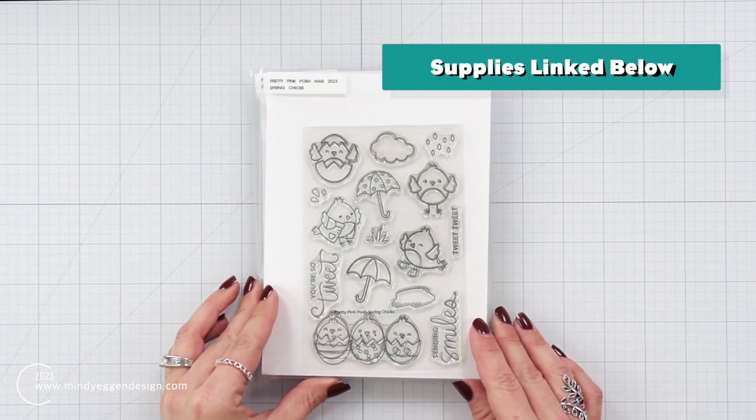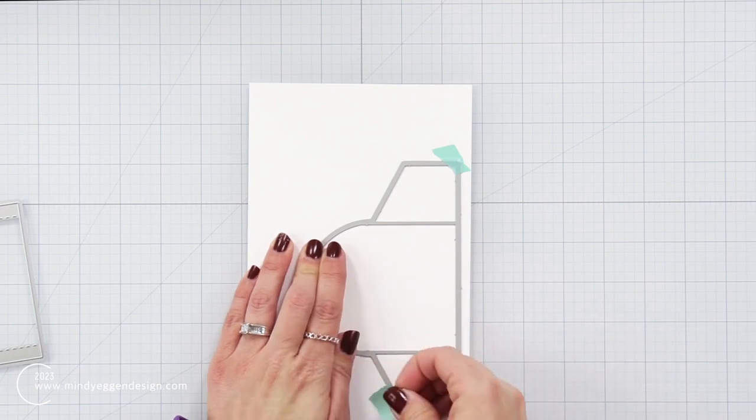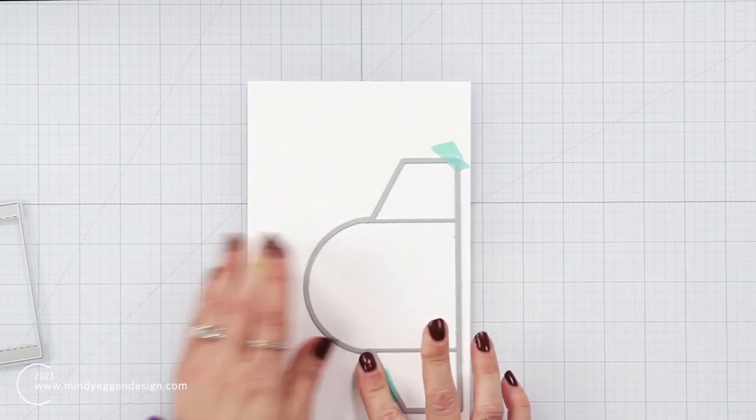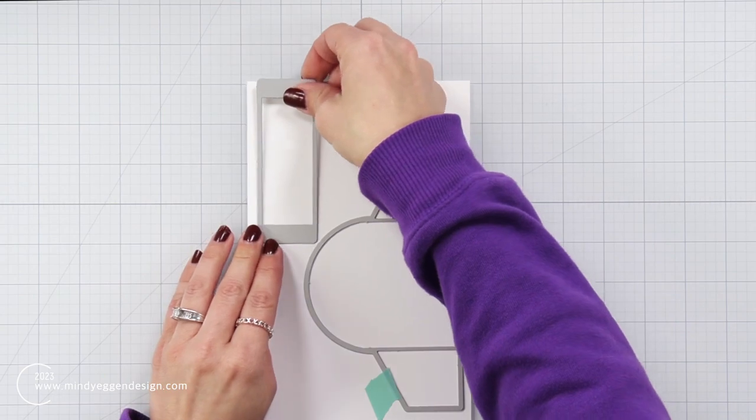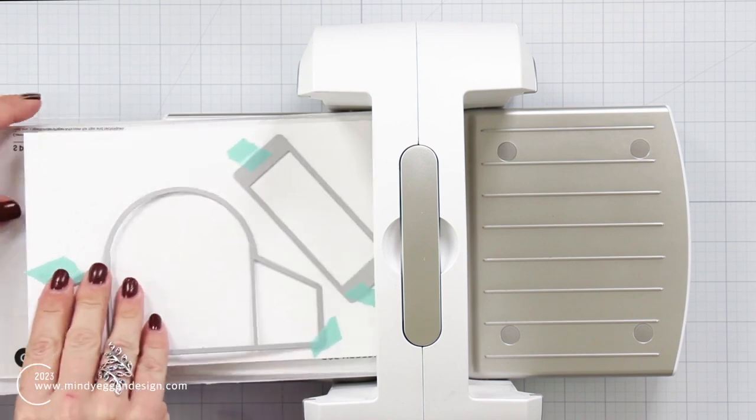Now I'm also going to be using the flower garden stamp set and the spring chicks. The first thing I'm going to do is die cut out this large piece which is our base and I'm also going to die cut out this straight rectangle piece from white cardstock.